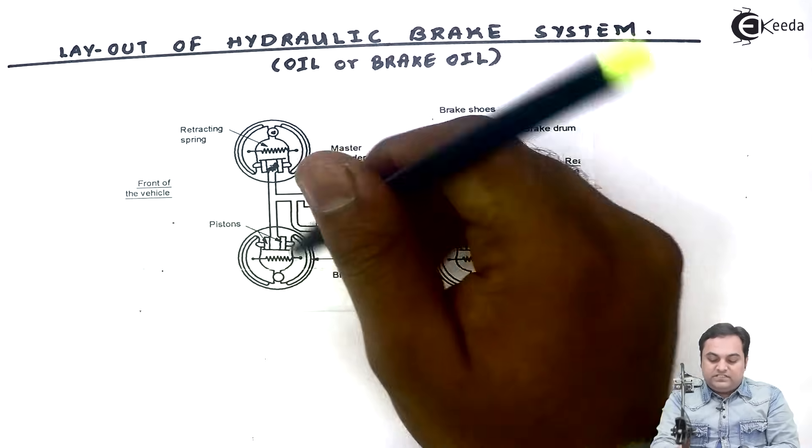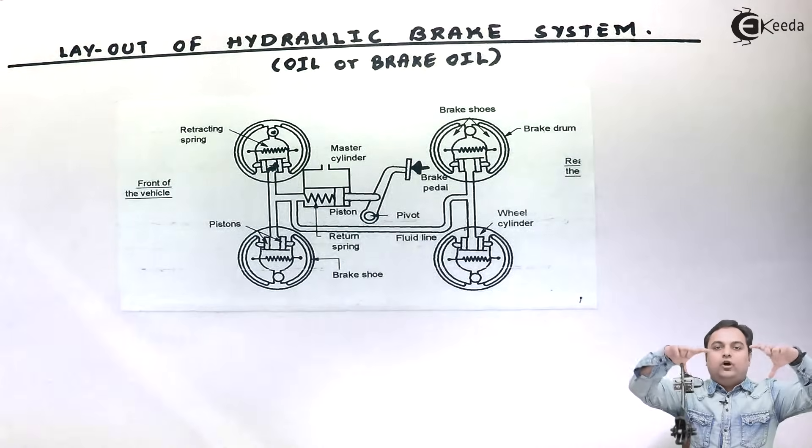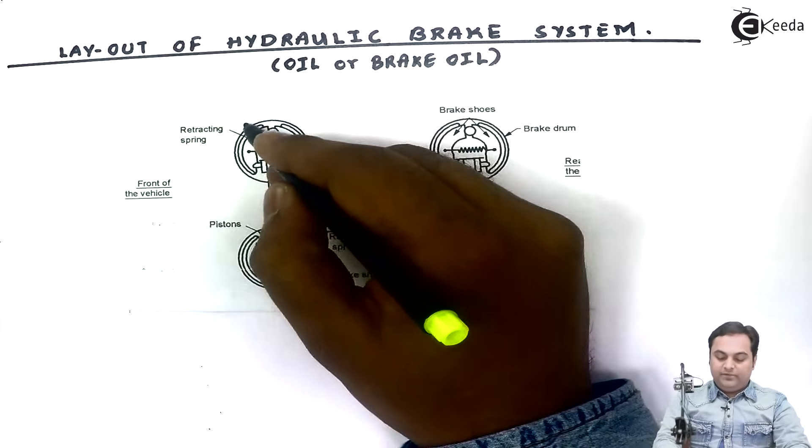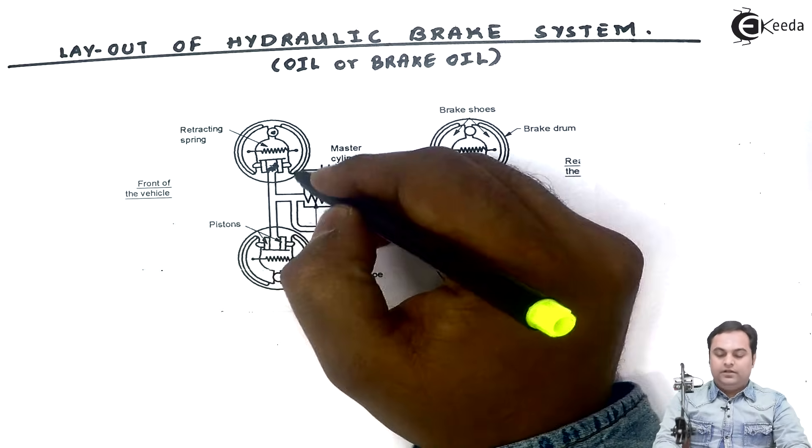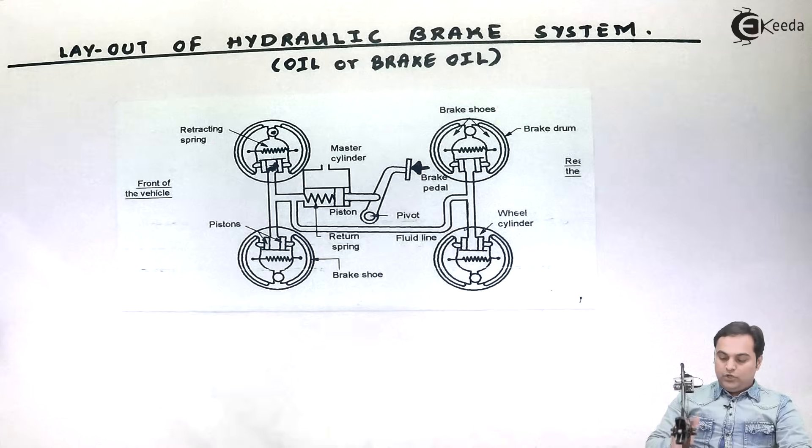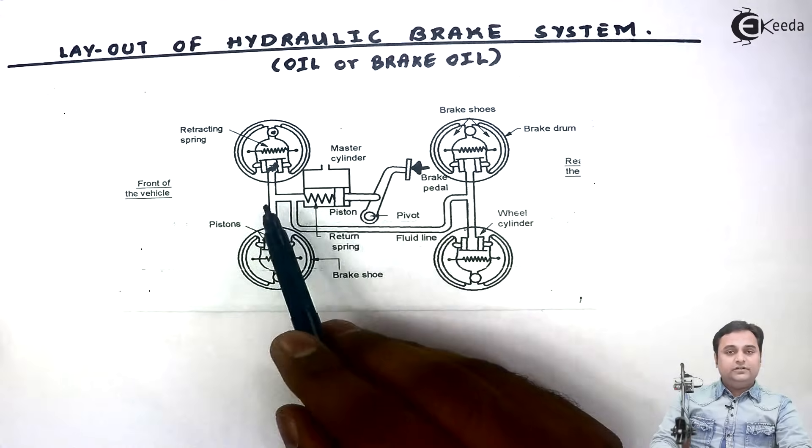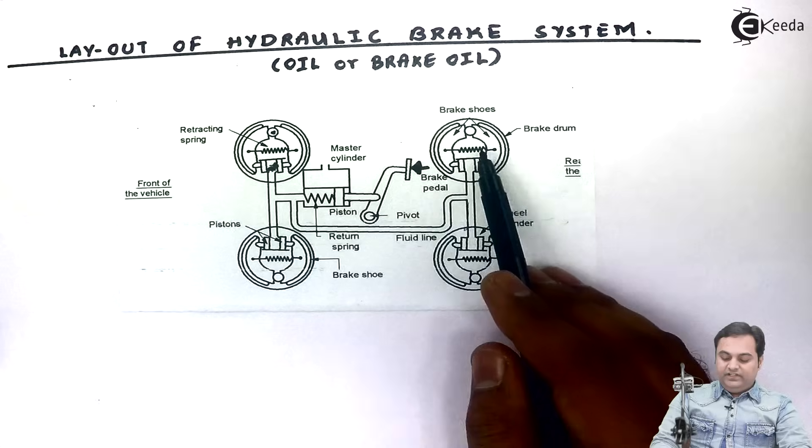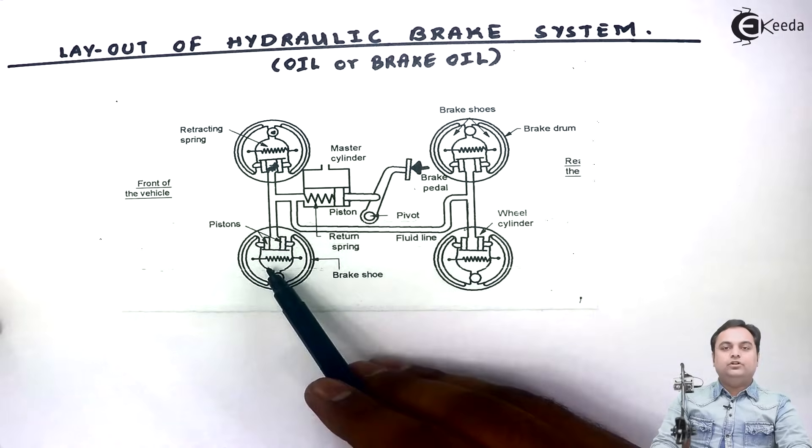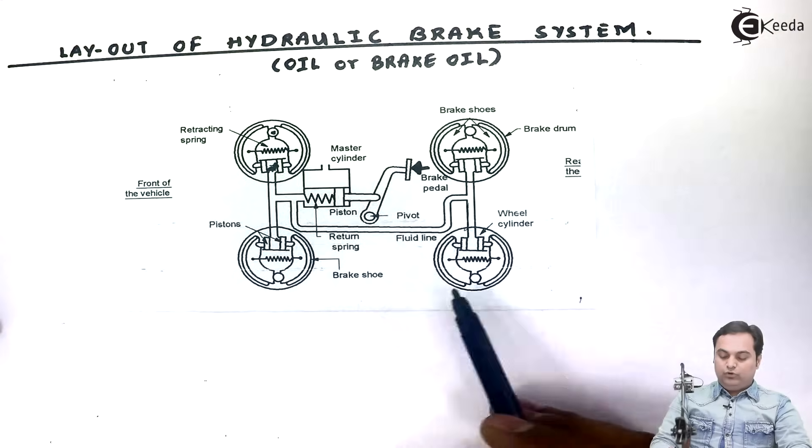When force is exerted on the piston, and with pivots provided, the brake shoe moves outward. When it moves outward, it comes in contact with the rotating brake drum, and hence the braking action takes place. Similarly, it happens in each of the wheels. Just by pressing one brake pedal, we are able to actuate the brake in all four wheels, and the vehicle is stopped.